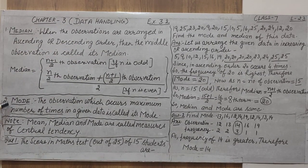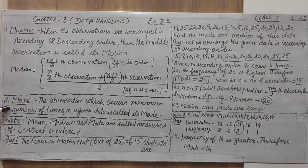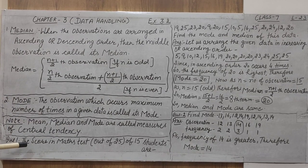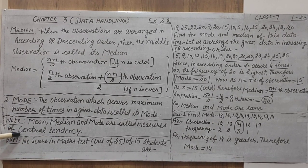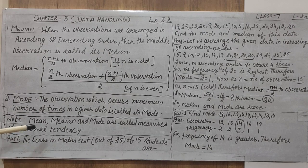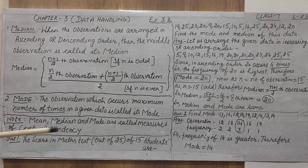These three things — mean, median, and mode — together are called central tendency. You must note it down that mean, median, and mode are called the measure of central tendency.